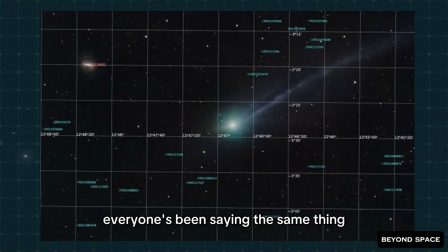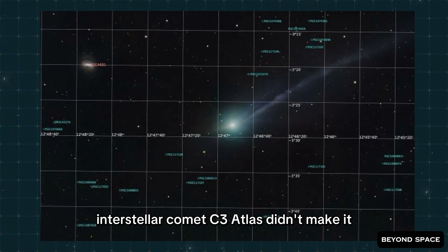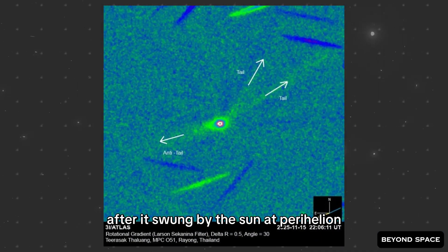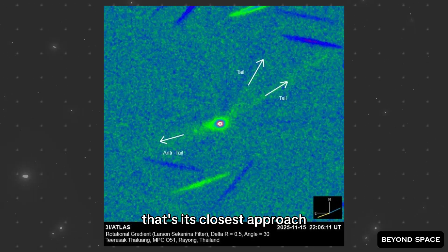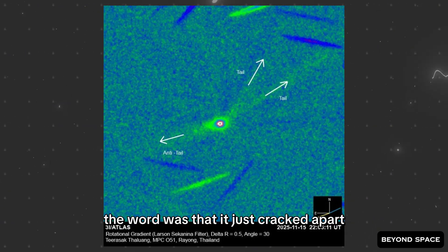For weeks now, everyone's been saying the same thing. Interstellar comet 3I Atlas didn't make it. After it swung by the sun at perihelion, that's its closest approach, the word was that it just cracked apart.